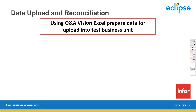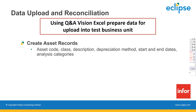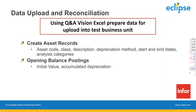The next step is posting the opening balances for the assets. As a minimum, for brand new assets we just need to post the initial value. But if assets have been in use already over a period of time, we also need to calculate and post the accumulated depreciation to date. We would normally do this using Q&A Vision to upload the related asset journals. We would also write a reconciliation report to compare the asset balances in the newly set-up Sun Fixed Assets against the existing system or manual method.